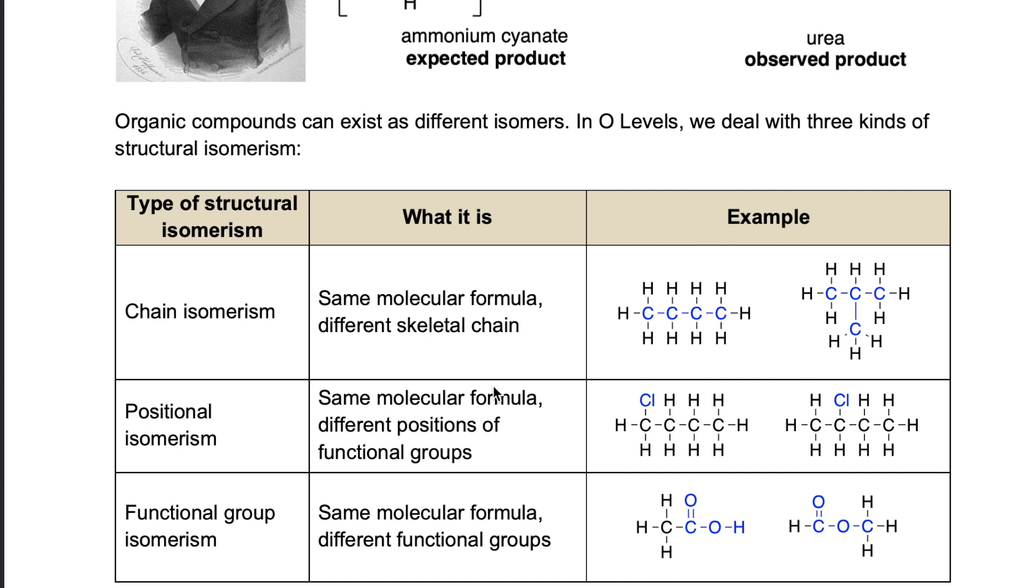Organic compounds can exist as different isomers. In O-levels, we deal with three kinds of structural isomerism and we look at each of them one by one. The first kind is chain isomerism, the second positional isomerism, and the third functional group isomerism.